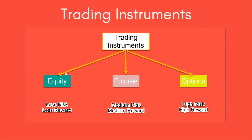Number one, equity offers less risk and also gives less reward. Similarly, futures offers medium risk and the reward is also medium. Whereas with options, it offers high risk and the reward is also very high. If you are a beginner or even an intermediate level trader, I request you to avoid both futures and options because of the risk they carry. The idea of this module is to understand how these instruments work and how they offer different degrees of risk and reward.